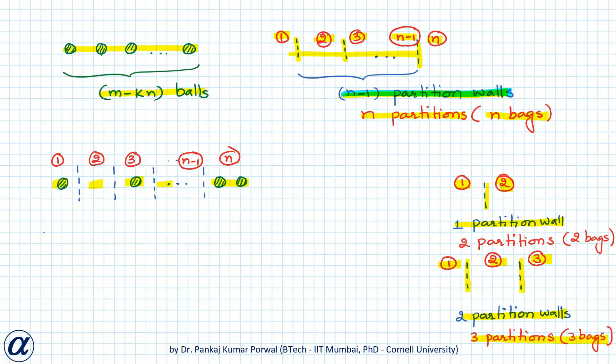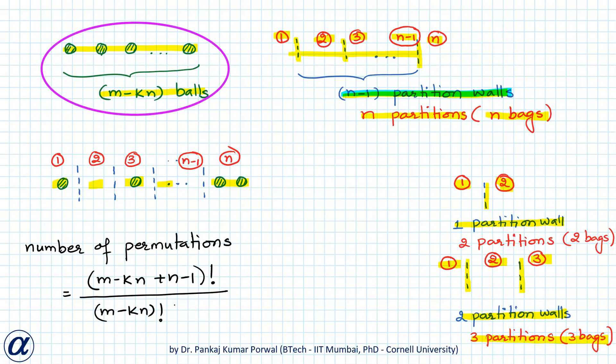Now the number of permutations of m minus kn objects of one type and n minus 1 objects of another type is (m minus kn plus n minus 1) factorial divided by (m minus kn) factorial, because m minus kn objects are of one type, times (n minus 1) factorial, because n minus 1 objects are of another type.